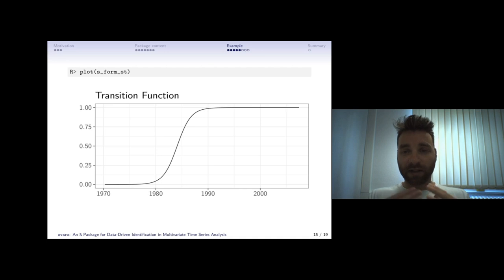The model searches for the transition point and the shape of the transition, the speed of the transition endogenously. This is the result. As economists, we might want to check is this a plausible model. When we look at the transition function of what happens during the 1980s in the U.S. regarding monetary policy, we know this is the period of the great moderation.